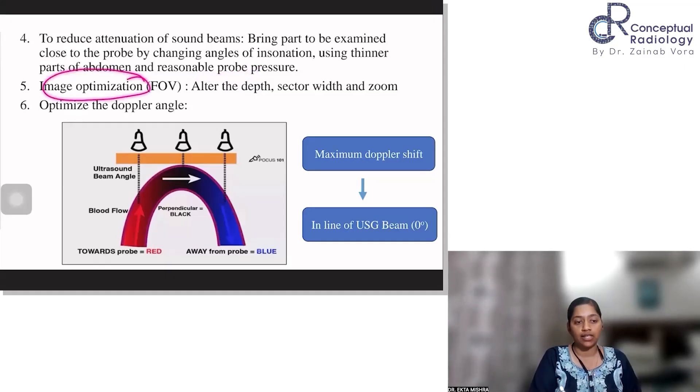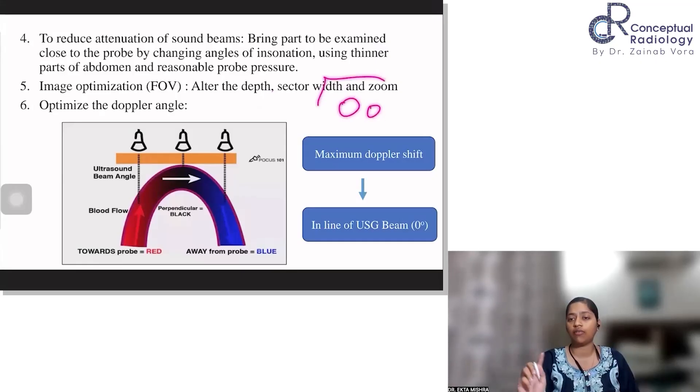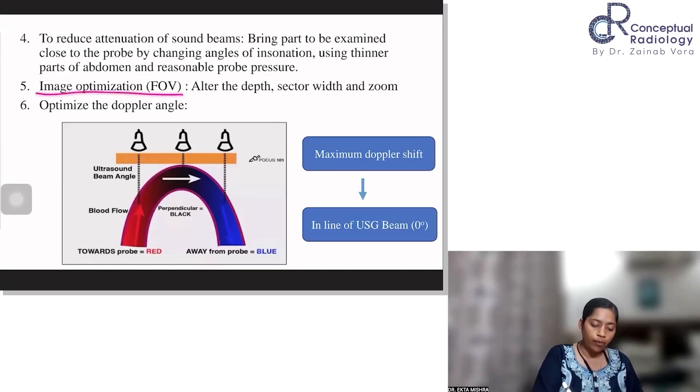After that, image optimization. You can alter the depth because the deeper you go more sound waves get attenuated and your quality decreases. So you alter the depth, the sector width. Don't image everything. You need to focus on the area. You want to focus on the artery. You can reduce the sector width and zoom appropriately. So your frame rate is appropriately adjusted. You want to keep the highest frame rate.